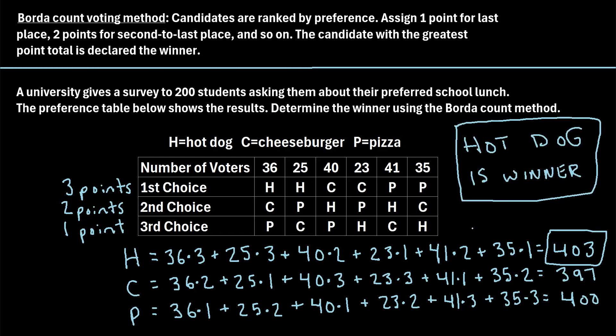One thing to note about the Borda count method is that it's possible to have a tie — two choices could both have the highest number of points. In that case, you would simply write out that there is a tie between the winners.